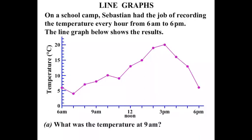The first question: what was the temperature at 9am? Well, there's 9am. It's a matter of reading straight up until we hit the line graph and then reading across. The temperature is somewhere between 5 and 10, and using the scale properly we find 8 degrees. So the answer is 8 degrees Celsius.